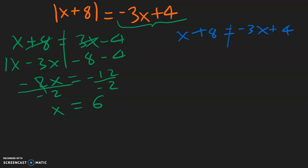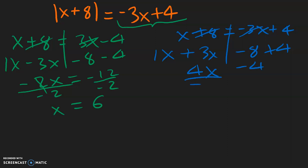And here, the x stays here, this negative 3x needs to move over — becomes positive 3x. This 8 moves — becomes negative 8 — and bring down the positive 4. So 1x plus 3x is equal to 4x, negative 8 plus 4 is negative 4. Oh sorry, this should be a positive 4. Dividing both sides by 4, we have x is equal to negative 1. So now we have our two solutions: 6 and negative 1.